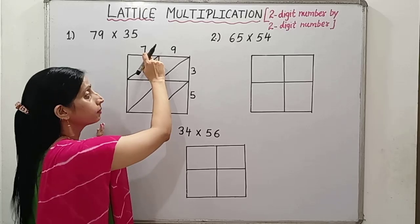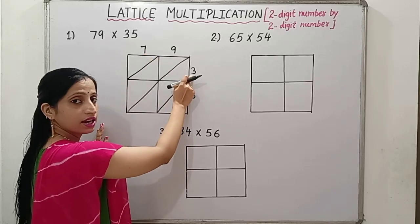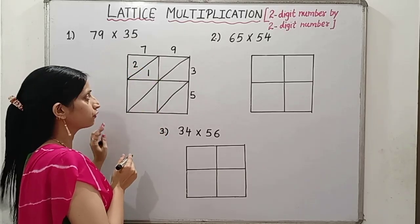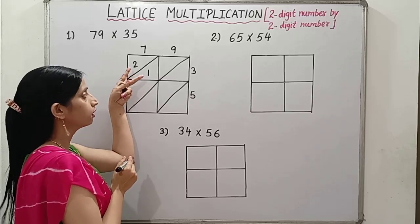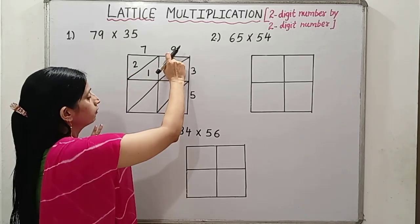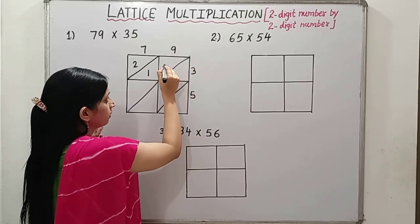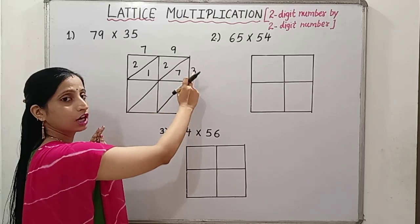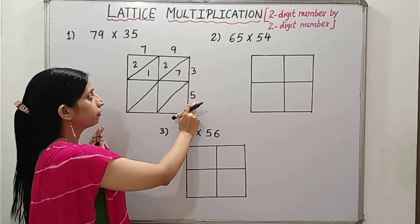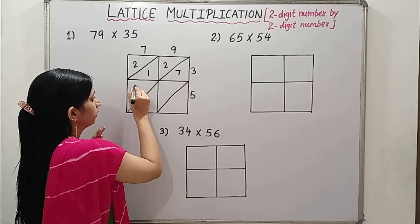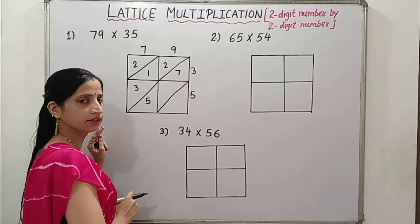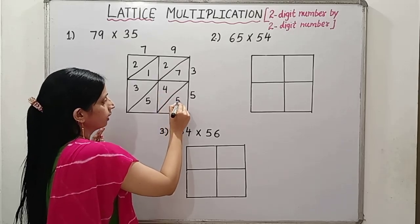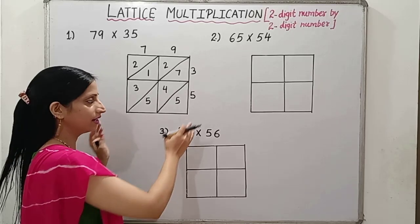Now first we need to multiply 7 by 3. 7 times 3 is 21, so we will write 2 here and 1 here. As we divided it in 2 parts, we will write both the digits separately. Then we will multiply 9 by 3. 9 times 3 is 27, so write 2 here, 7 here. Now we will multiply with 5. So 7 times 5 is 35, write 3 and 5. Then 9 times 5 is 45, write 4 and 5. Till here it is simple.